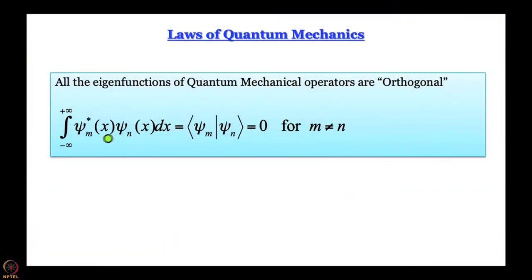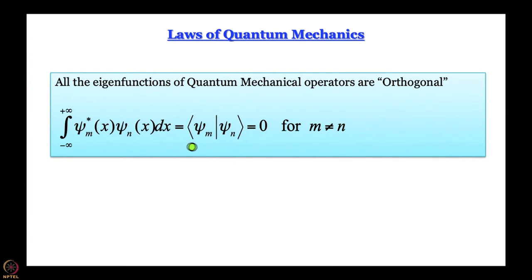Now we come to the next postulate: all eigenfunctions of quantum mechanical operators can be represented as linear combinations of functions that are mutually orthogonal. Orthogonality means you take two functions, take the complex conjugate of one, multiply by the other, integrate over all space, and you get zero. This integral is often written in Dirac's bracket notation as ⟨ψₘ|ψₙ⟩, which means the integral of ψₘ*(x) · ψₙ(x) dx over all space. If m ≠ n, this integral is zero.